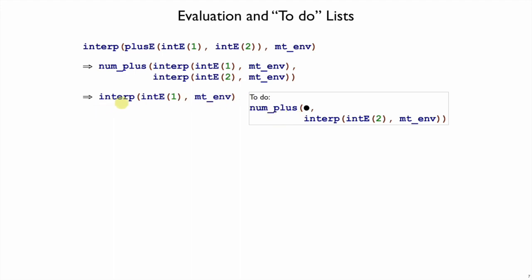Sometimes we show this context for an interp call using indentation and a trace, but here I'm going to write the current call that we're working on, plus everything that we need to do to finish in another box on the right, and we'll call that the to-do list.